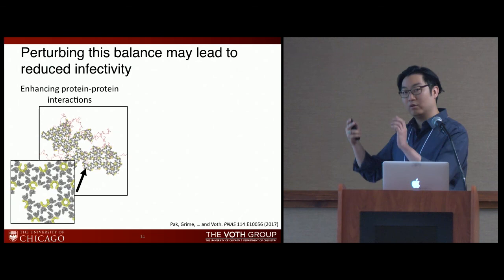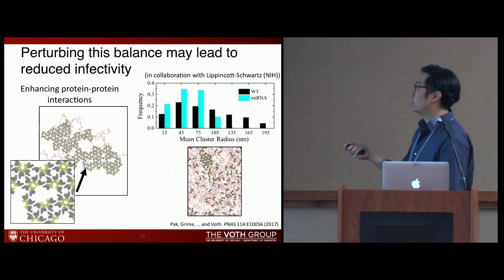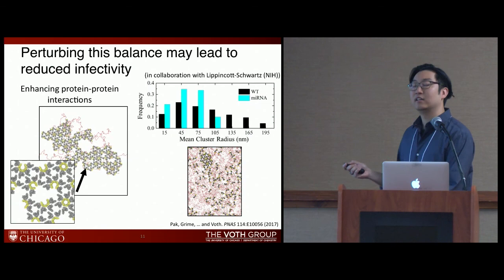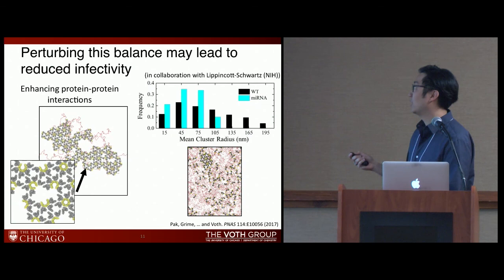We can also introduce competitive inhibitors. One of our collaborators studies non-silencing microRNA, and we've shown that with increased populations of this non-silencing RNA, we can decrease the population of large clusters compared to wild type. These are experimental results, and our simulations show something similar.